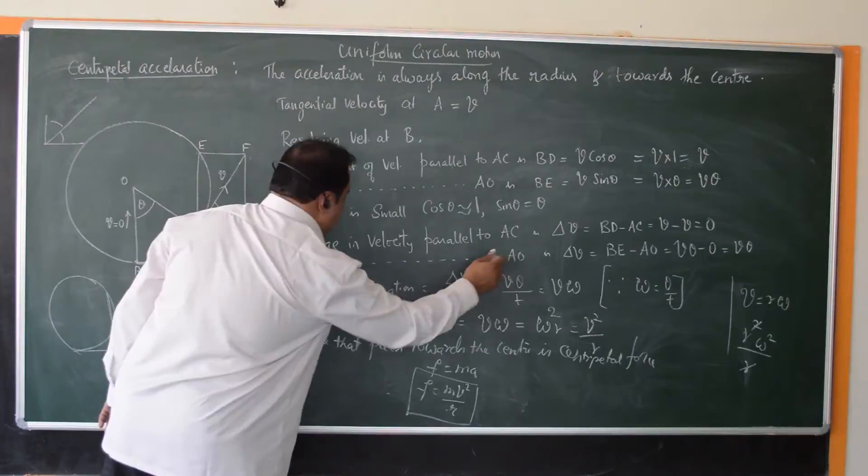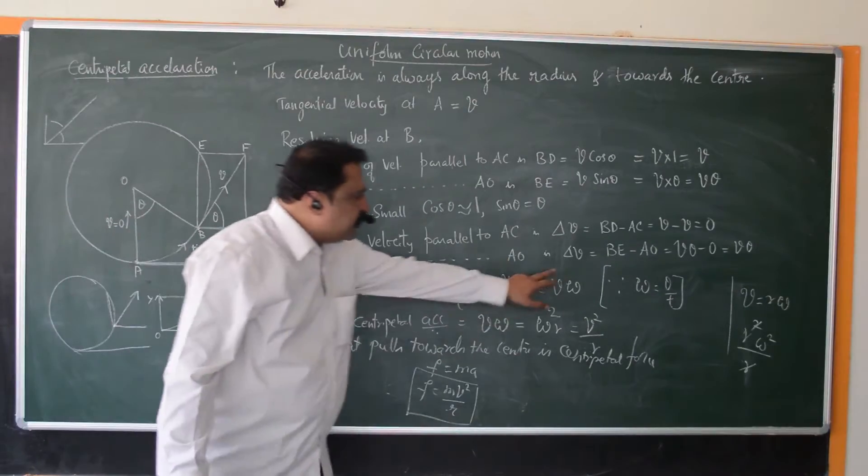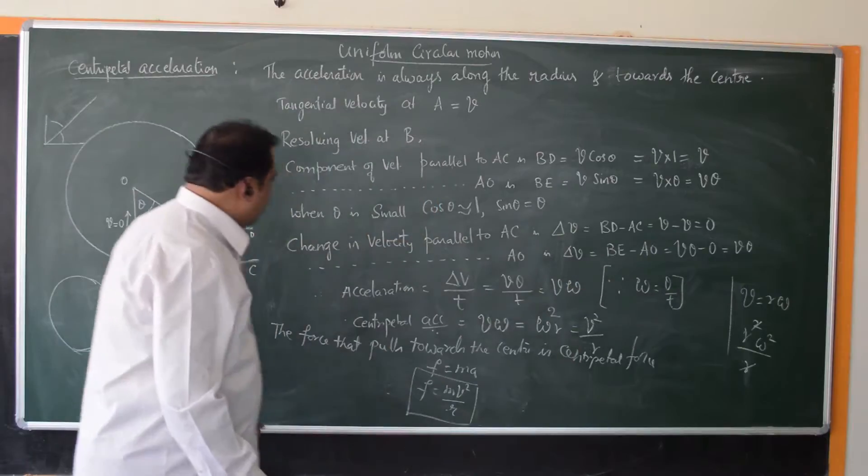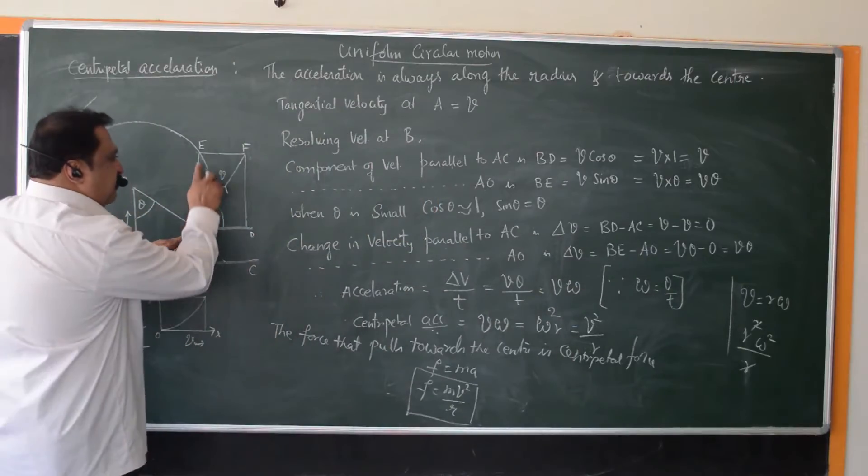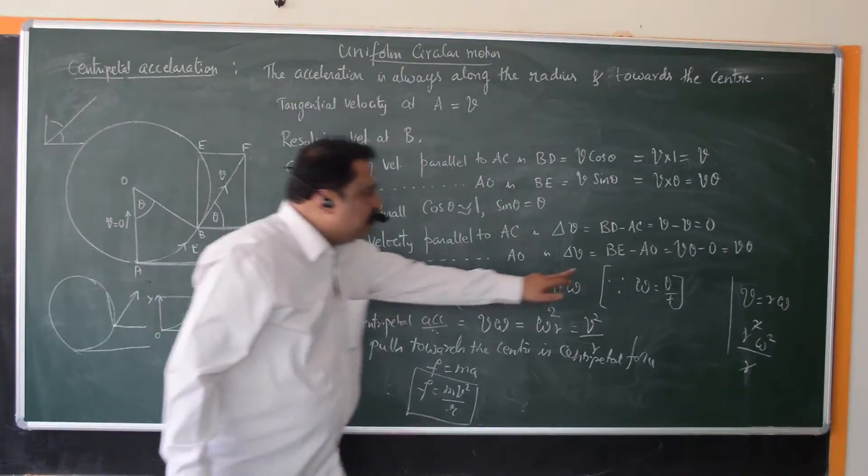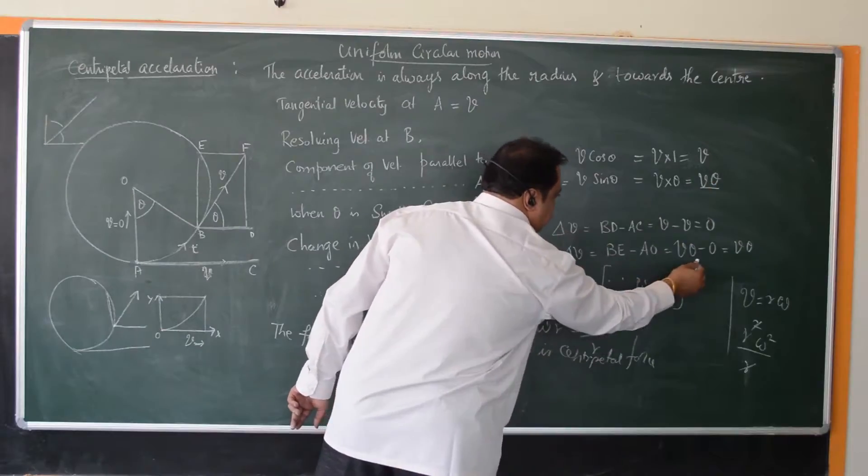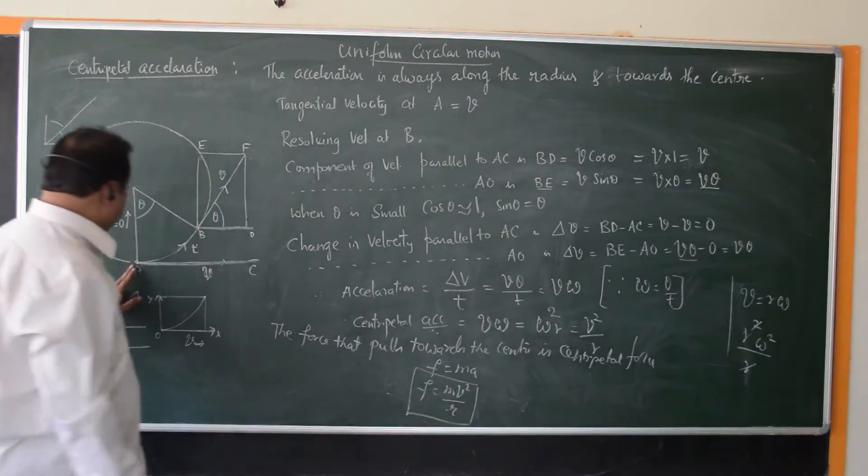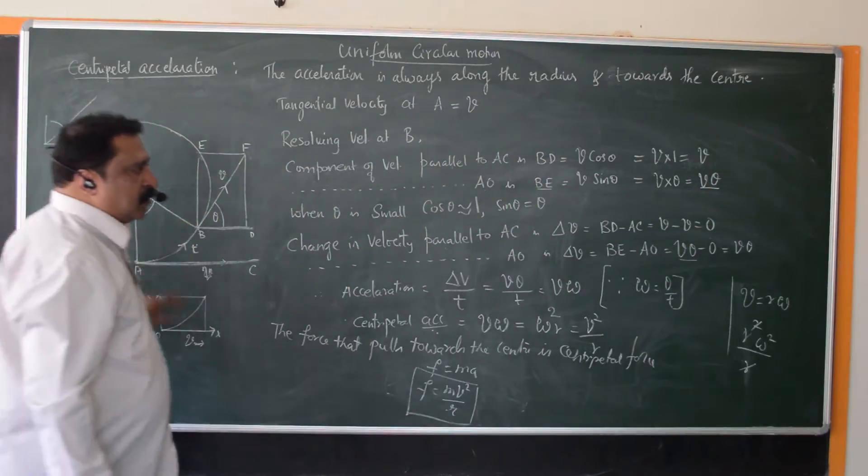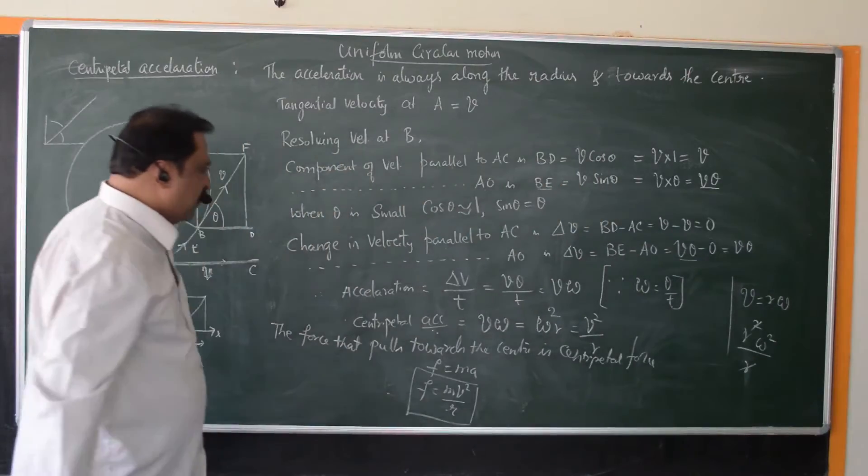Now change in velocity parallel to AO, it is vertical. Again change in velocity is delta V. Now if you look at that change in velocity, it is BE minus AO. What is BE? BE is V theta. And what is AO? Velocity along AO is 0. So it is V theta minus 0. So it is just V theta.